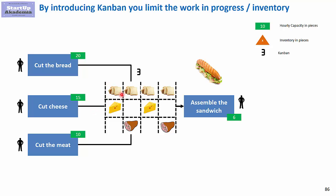Kanban is basically a supermarket — a rack with set places that limits your production. For example, we have four places for cut bread, two places for cheese, and two places for meat. The person cutting bread should stop once they have cut four pieces. The person cutting cheese should stop once there are two sets of cheese cut, and the same goes for meat. In this way, we don't have too much inventory, yet we have sufficient material for the assembler to work fast.